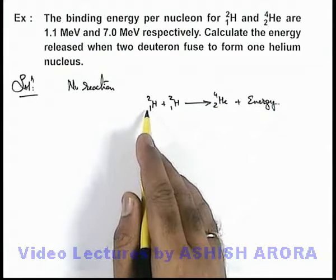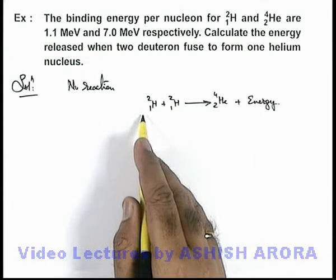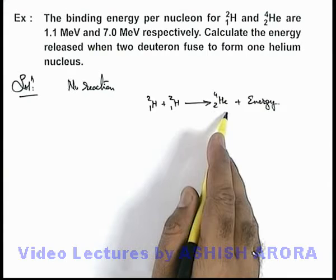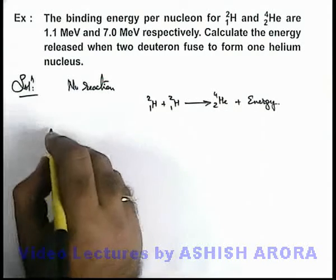So the binding energies of these deuterons can be considered as activation energy of the reaction, and the total energy released will be the binding energy of helium. So here we can directly write the energy released.